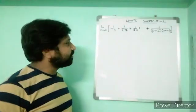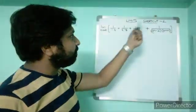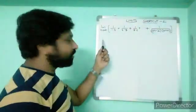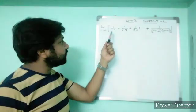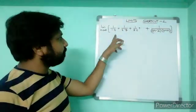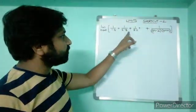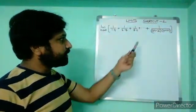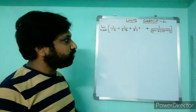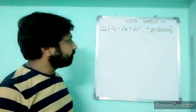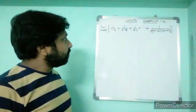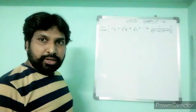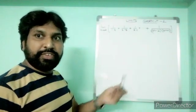Good morning friends. Today is shortcut number 2 on limits. The question is: limit n tends to infinity of 1/(1×4) + 1/(4×7) + 1/(7×11) + ... + 1/((3n−2)(3n+1)). First I am going to introduce the method, and afterwards I will reveal the shortcut.